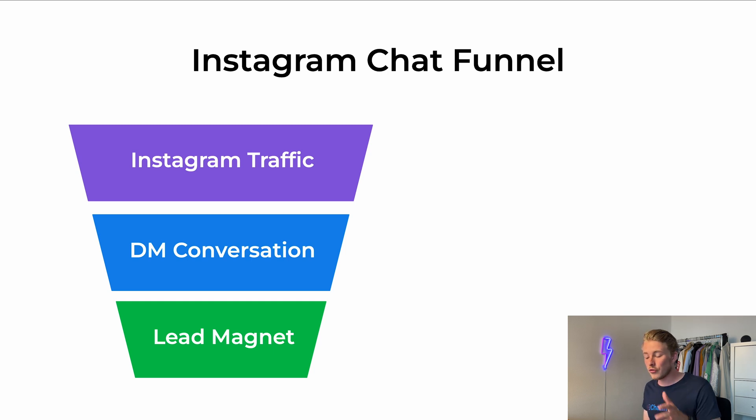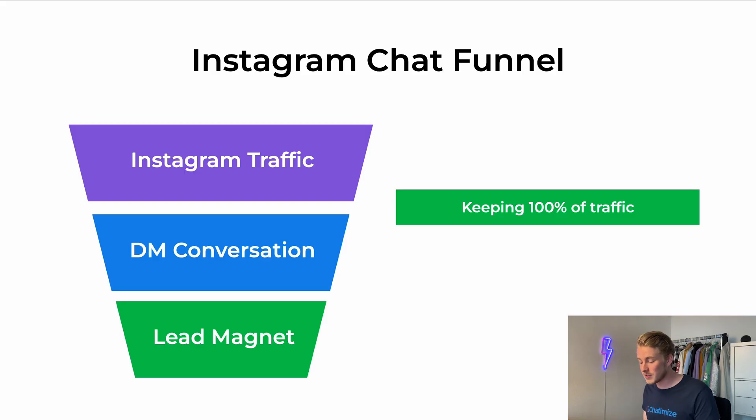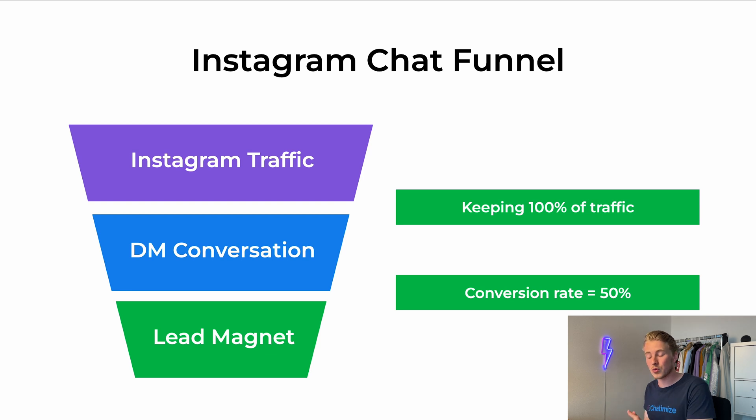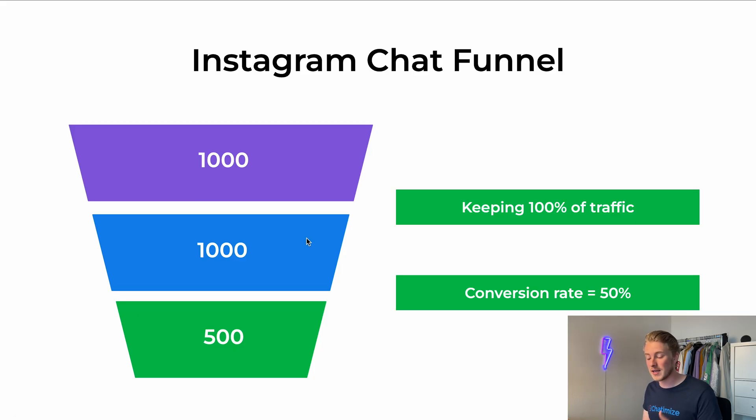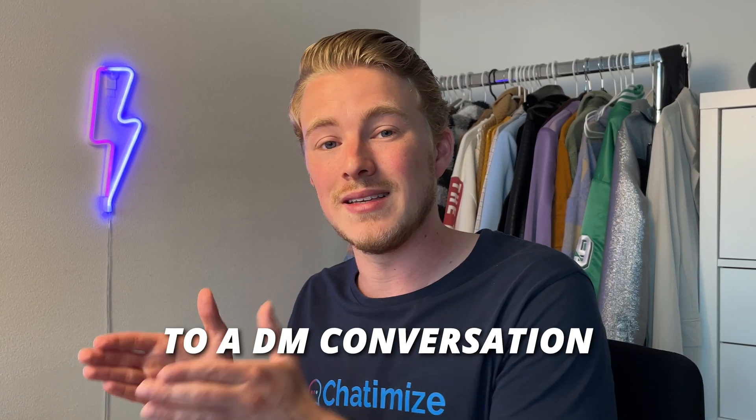This will work way better than using a landing page. Instead of sending people to our link in bio and losing 80% of the traffic, we keep 100% of the traffic by starting a DM conversation. Inside the DM conversation, we convert an Instagram follower into a lead. When working with our own clients, the average conversion rate we get on our funnel is at least 50%. So starting with a thousand people, a thousand will get an Instagram DM conversation and 500 will sign up for our lead magnet — compared to only 20 in the previous situation. This is just by changing from a landing page to a DM conversation.